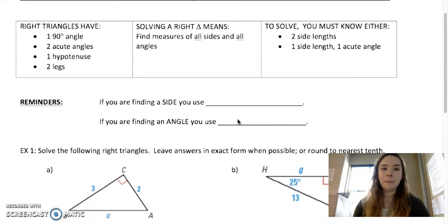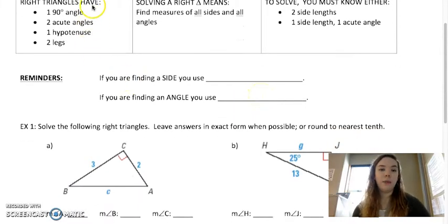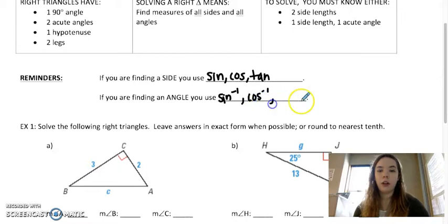And again this only works for right triangles. If you are finding a side you use the regular sine, cosine, and tangent. If you're finding an angle you use the inverse, so sine inverse, cosine inverse, or tangent inverse. So the forward direction is to find a side, the opposite is to find an angle.